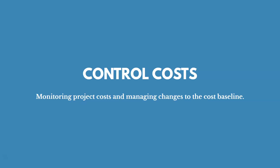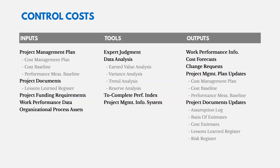Now let's look at the control costs process — monitoring project costs and managing changes to the cost baseline. The project management plan comes in telling us what our baseline was and what we're starting with. The cost management plan tells us how we control costs. We take the cost baseline and compare it to what actually happened via work performance data, tracking how much we spent and when. We also compare against our project funding requirements to see how what we actually received and spent compares to the plan.